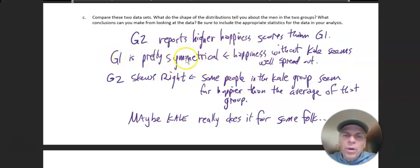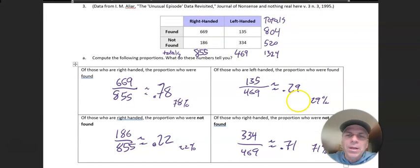Also says since group one is pretty symmetrical, it seems that happiness without kale is well spread out—it's evenly distributed. So people who ate kale, it seems like they just have this average spread of happiness. Group two, the kale eaters, spreads to the right, skews to the right. So maybe that means that certain people are really affected by kale—like it makes them really happy. Who knows what's going on. Okay, next page.